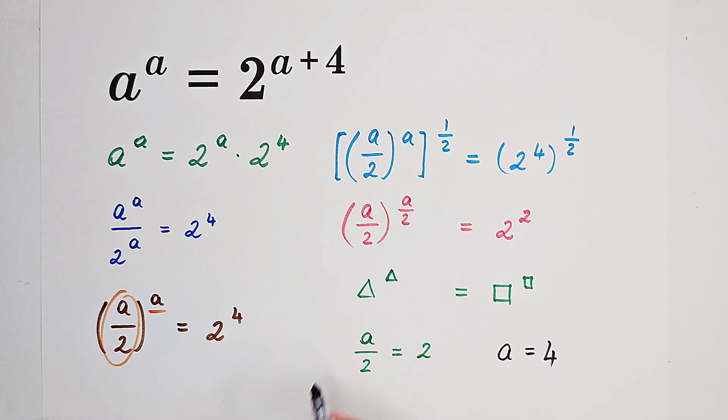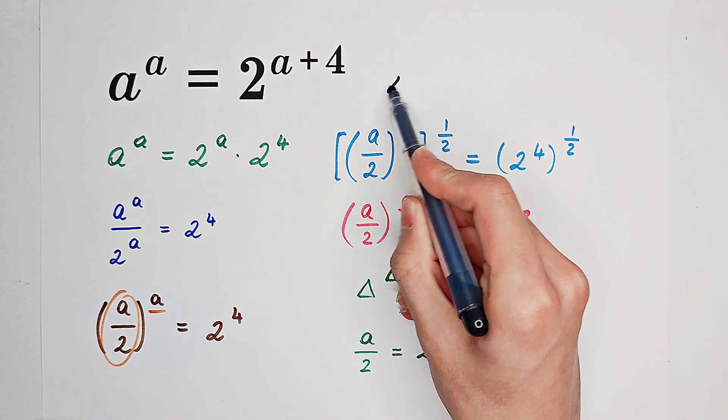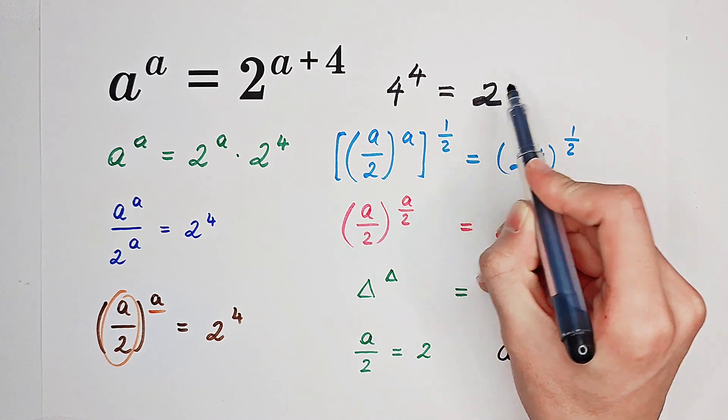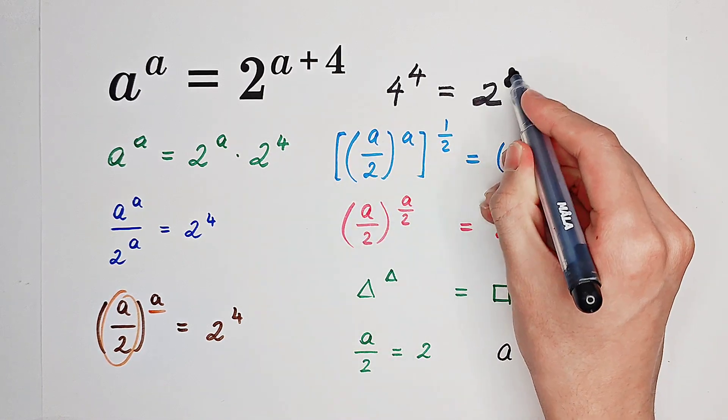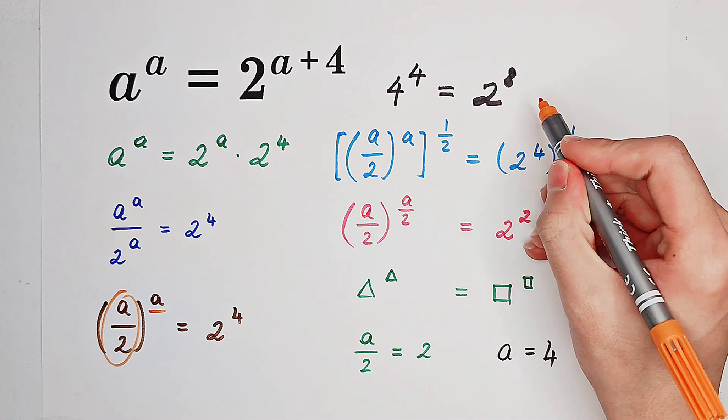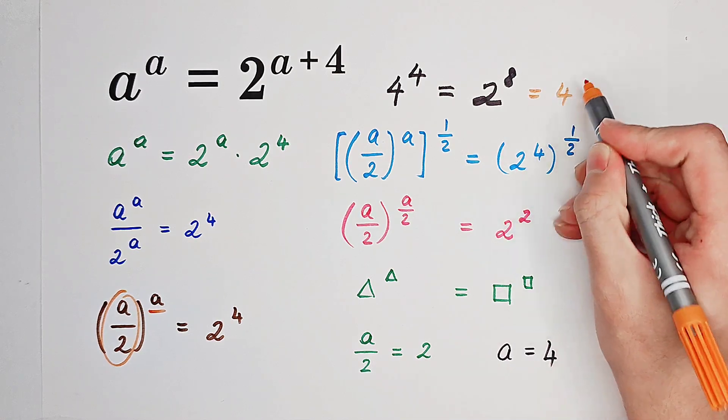And now, on the left-hand side, we have 4 to the power of 4. On the right-hand side, we have 2 to the power of 4 plus 4 is 8. And that is equal to 4 to the power of 4.